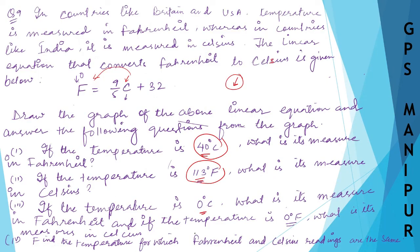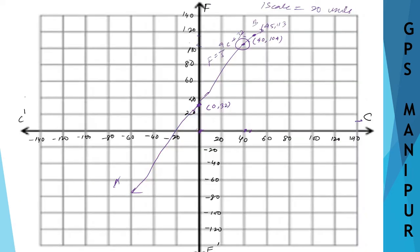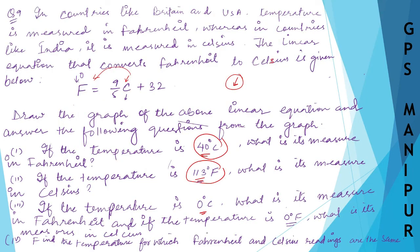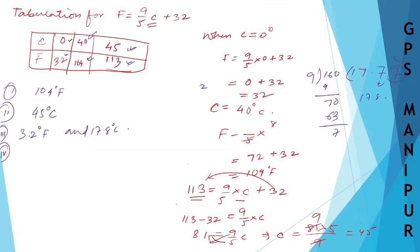Last part: find the temperature at which the Fahrenheit and Celsius readings are the same. Looking at the graph, you can see that at −40 on both axes the line passes through the point (−40, −40). So the temperature is −40°, which is the same in both Fahrenheit and Celsius. That's all — thank you, we'll meet in the next video.